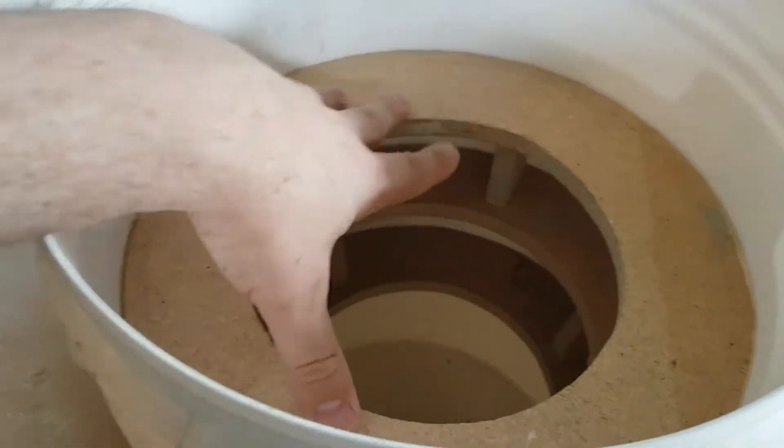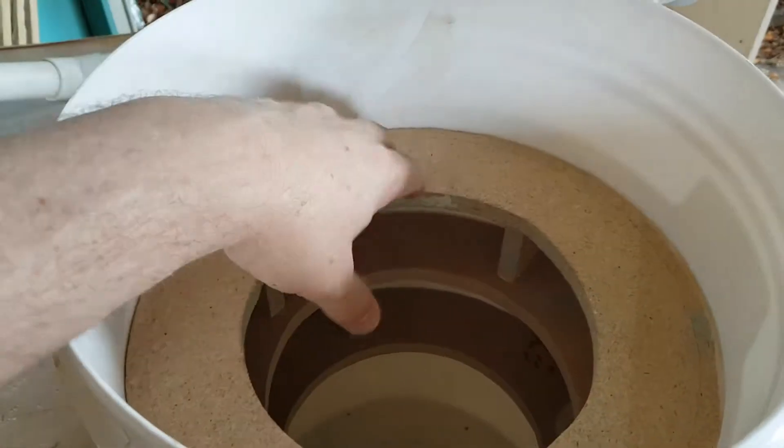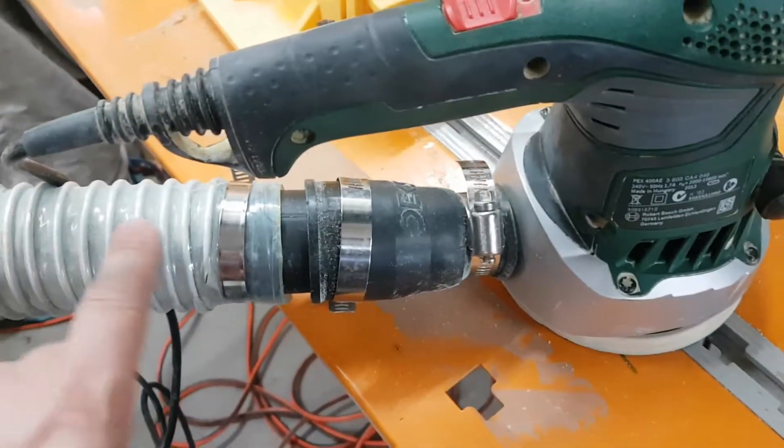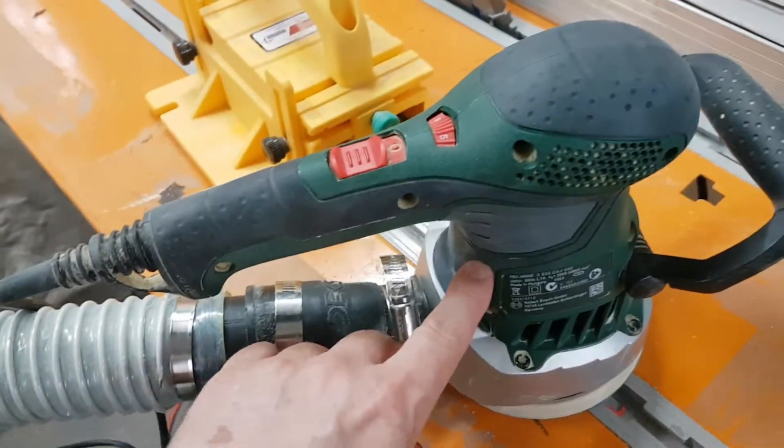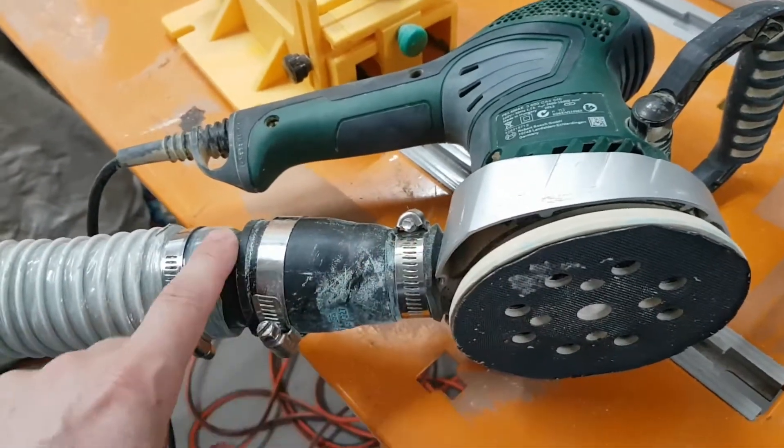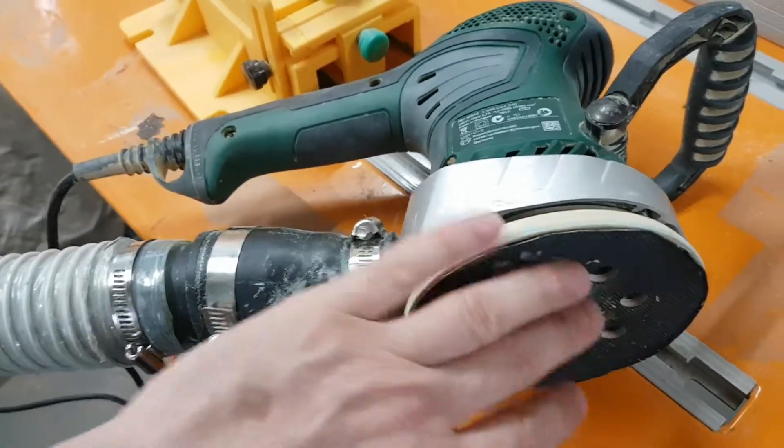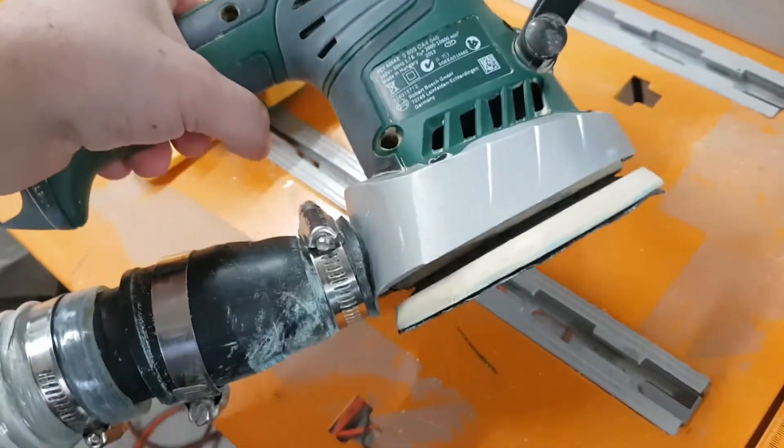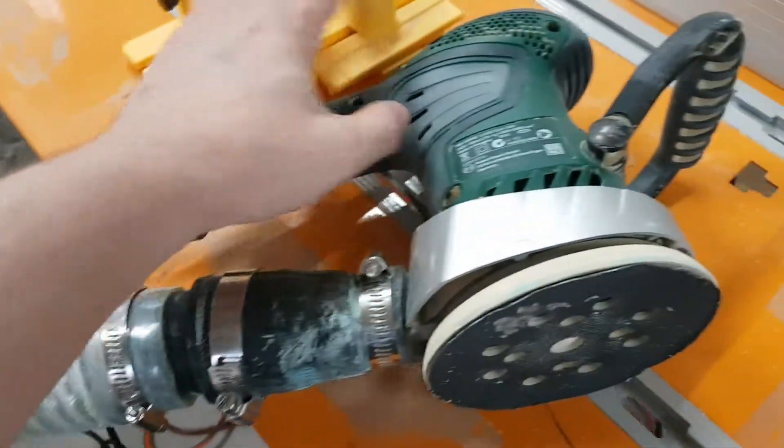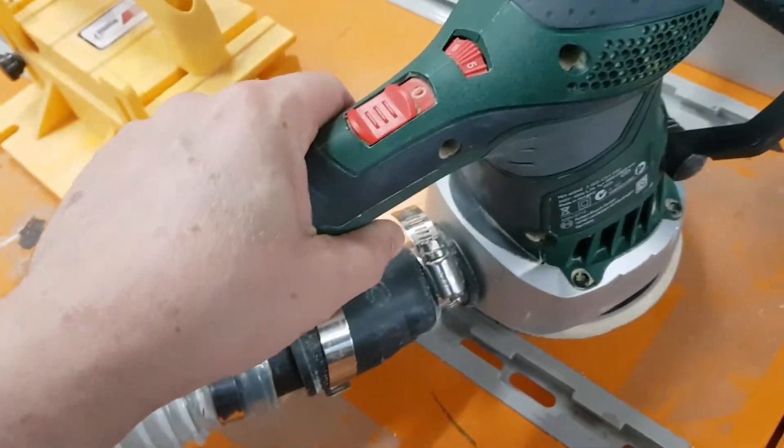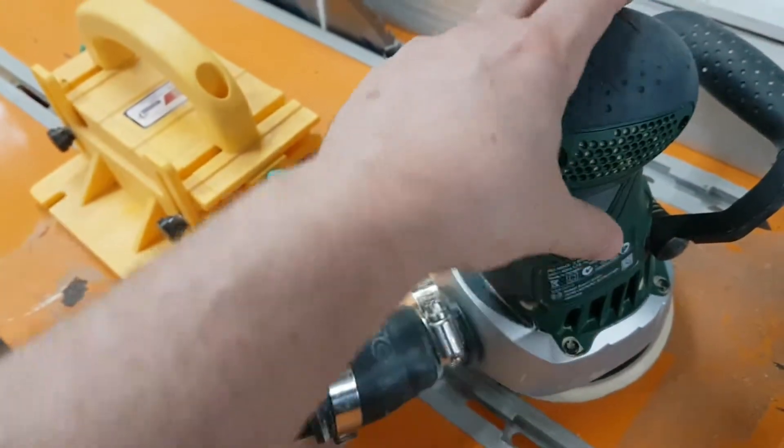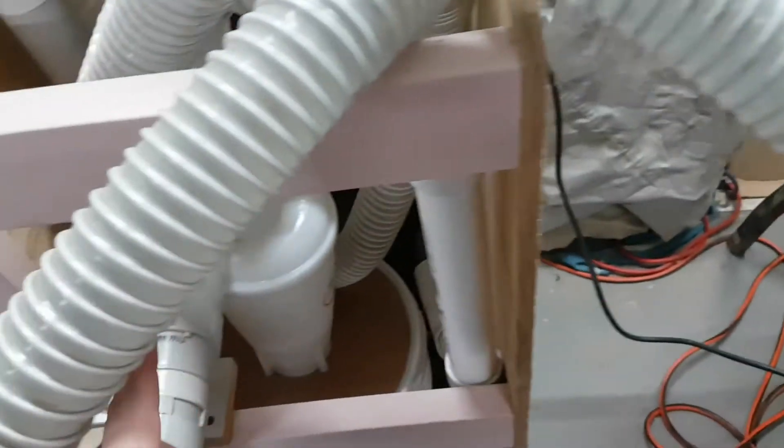Most of the time I have the shop vac connected to my random orbital sander, so it sucks in here through these holes. It sucks away the dust as it's sanding. However, this actually worked so well that when it hit a flat surface, it would actually suck the machine down so you couldn't hardly move it.